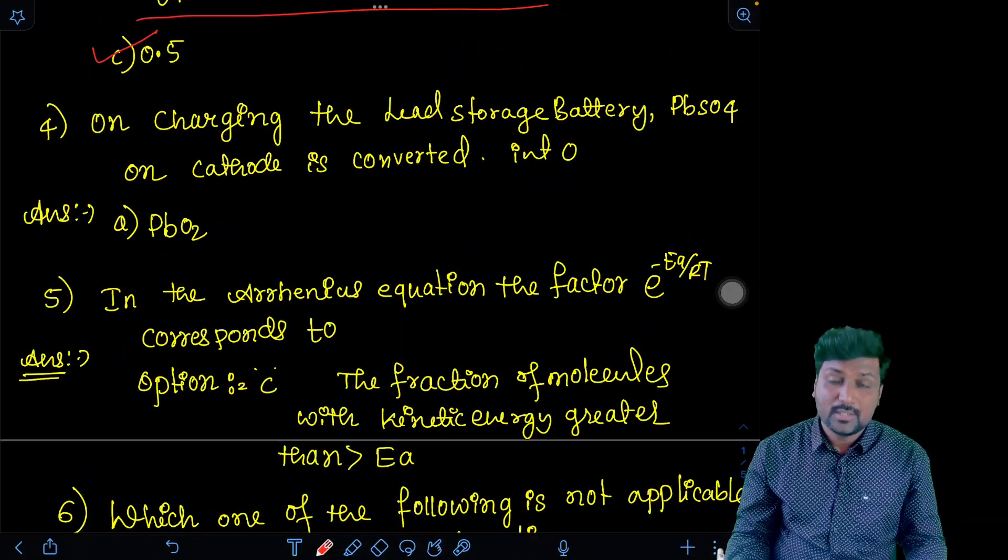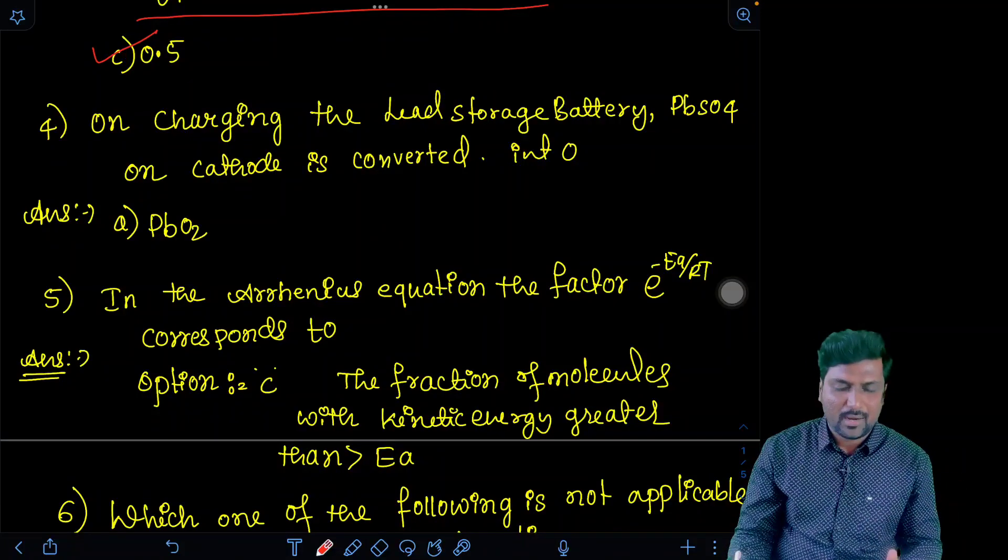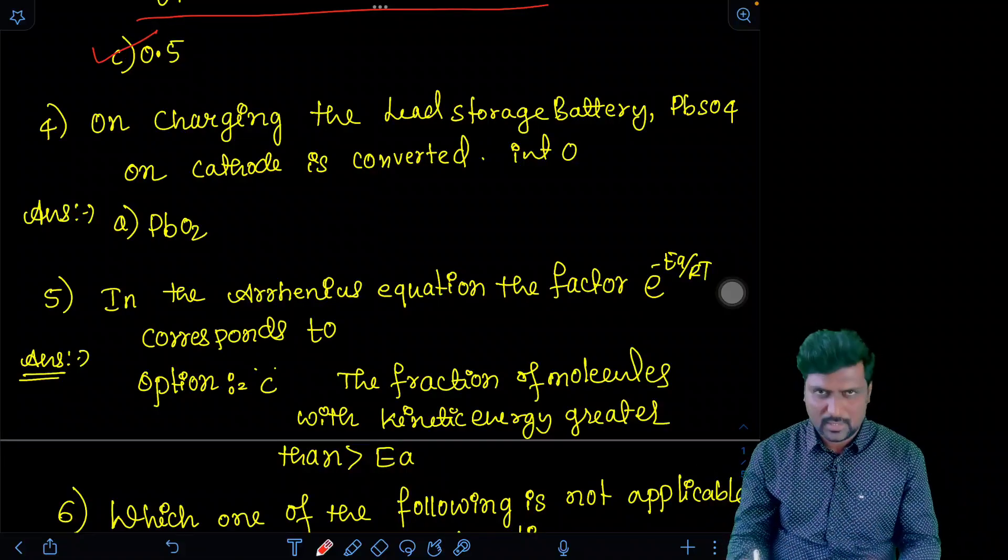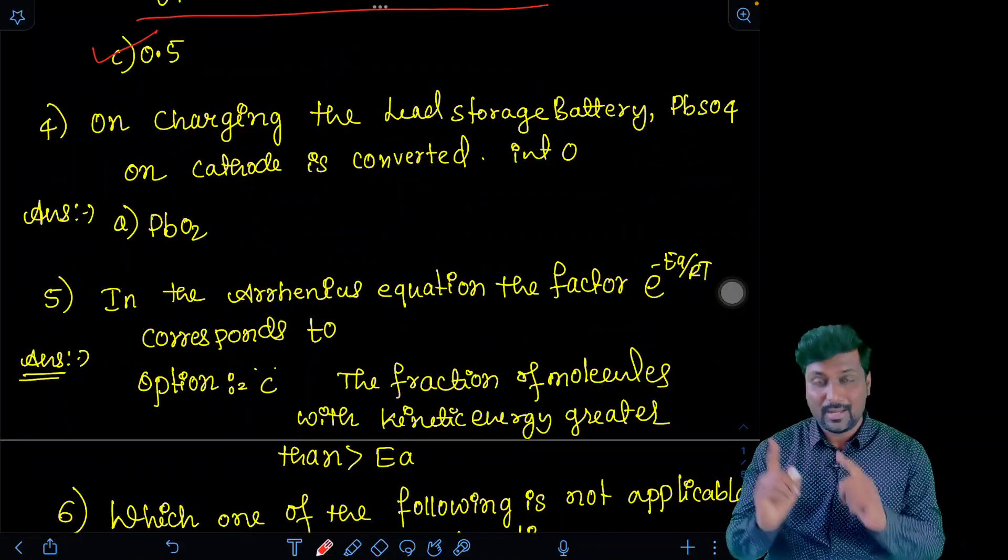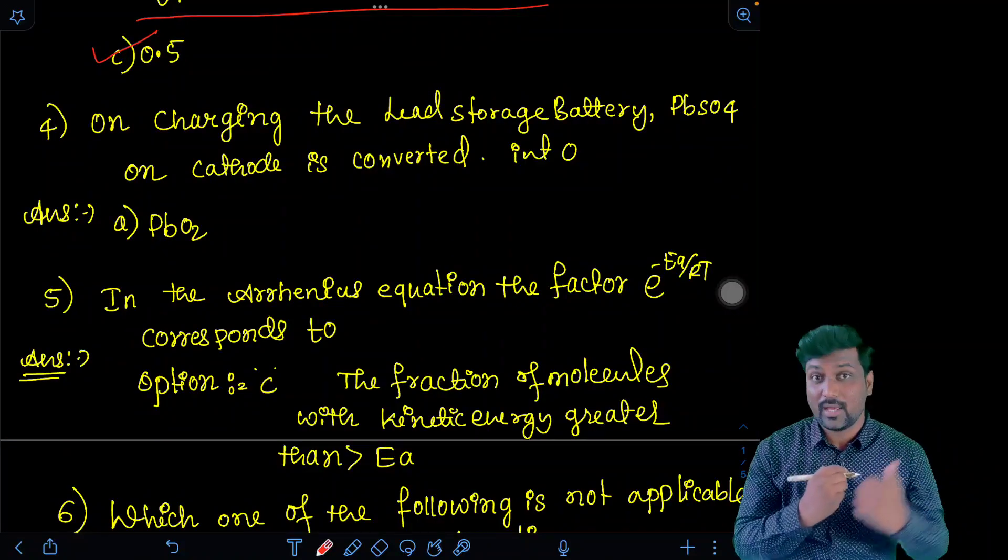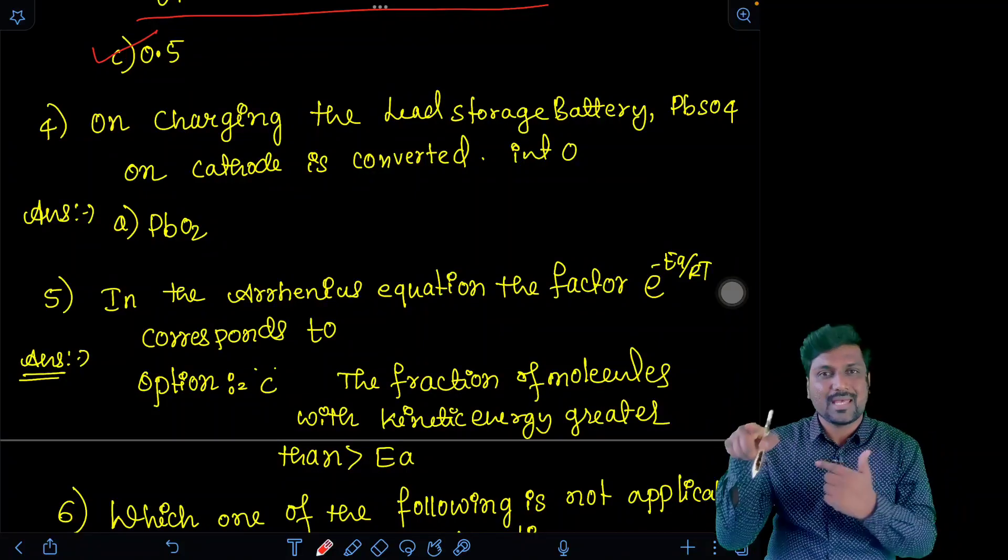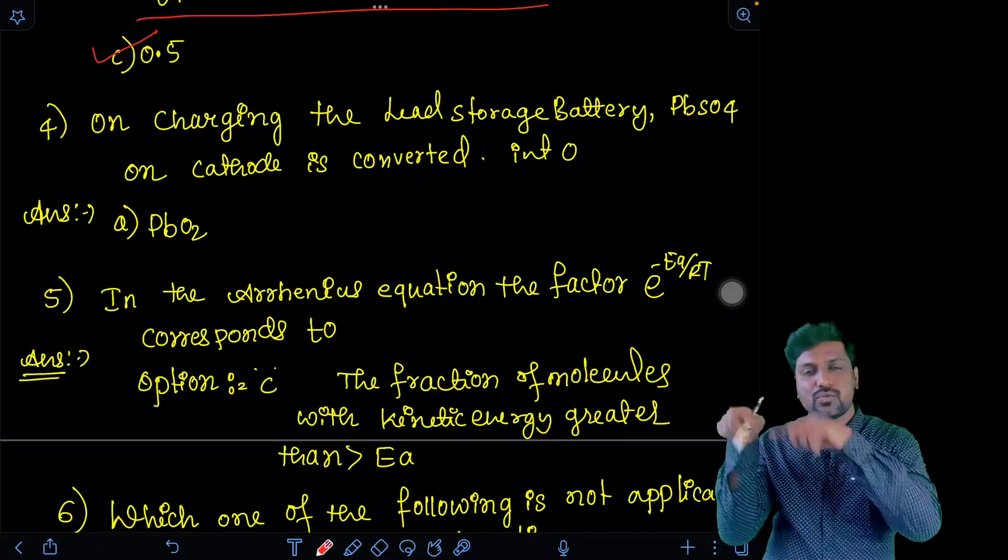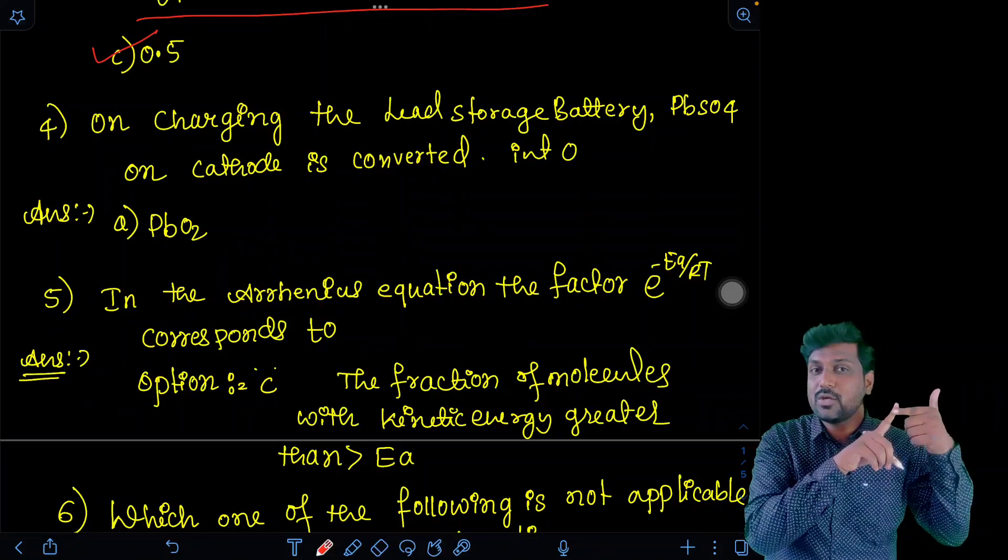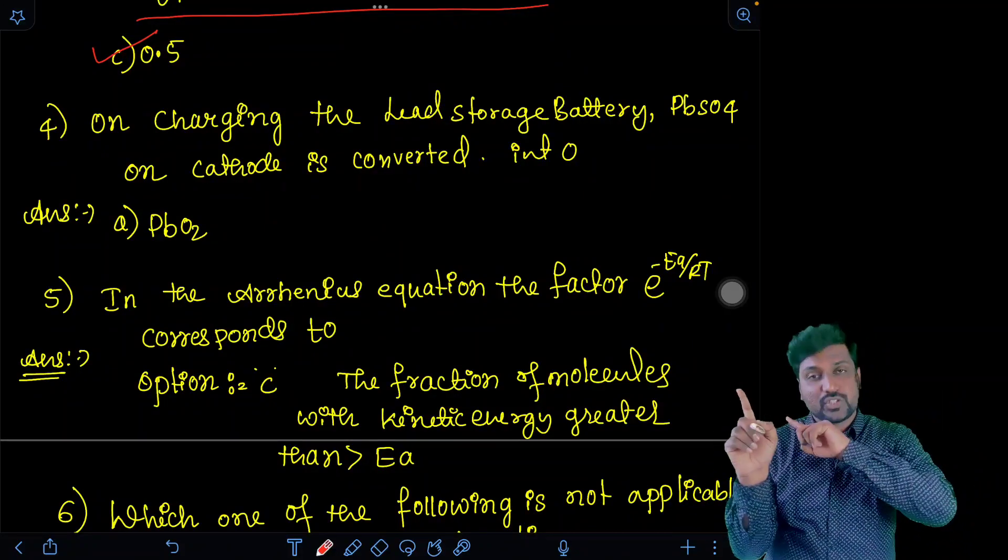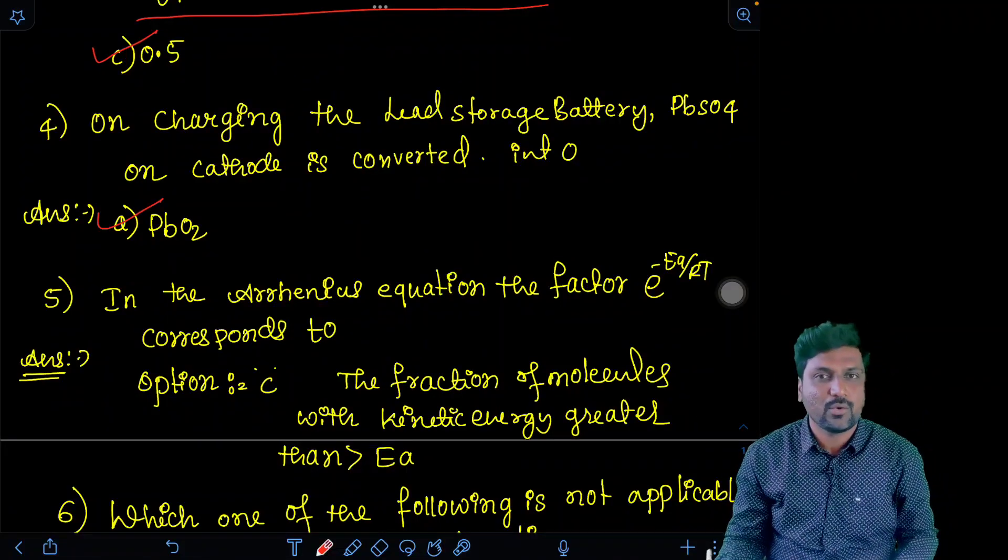Next, question number four. On charging lead storage battery, lead sulfate on cathode is converted into. Actually, students get confused - discharging. So reverse is charging. That is PbO2 is the answer. Lead sulfate changes into PbO2 at cathode. Discharging at cathode, PbO2 changes into PbSO4. That is the reverse reaction. PbSO4 changes to PbO2. Therefore, the answer is PbO2.